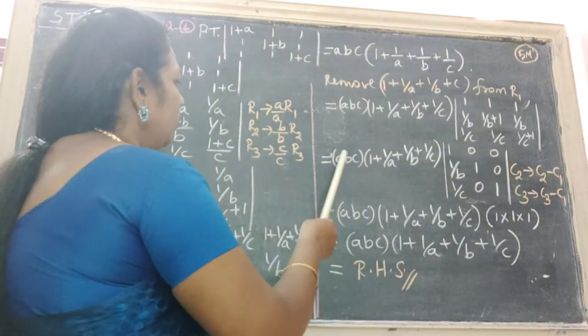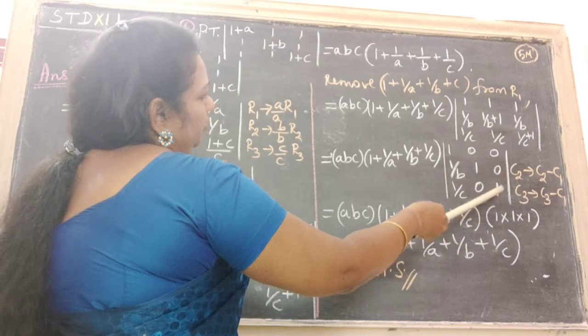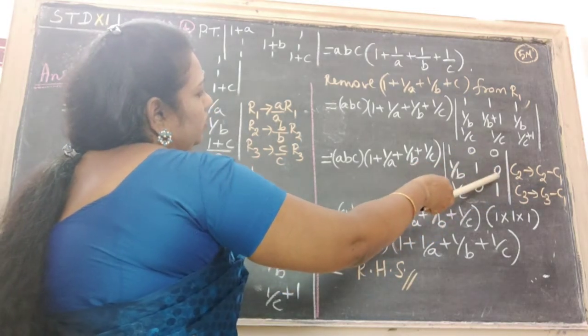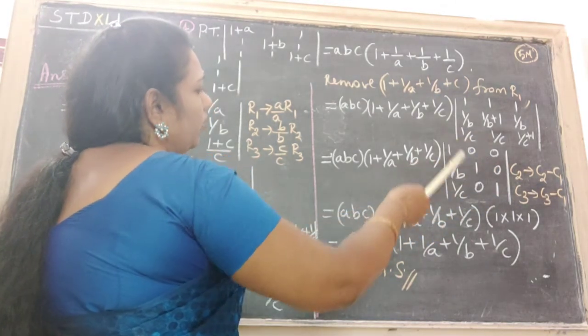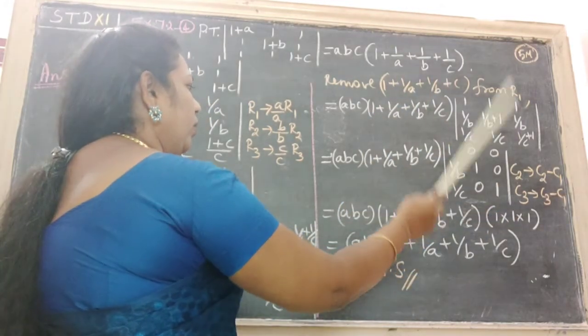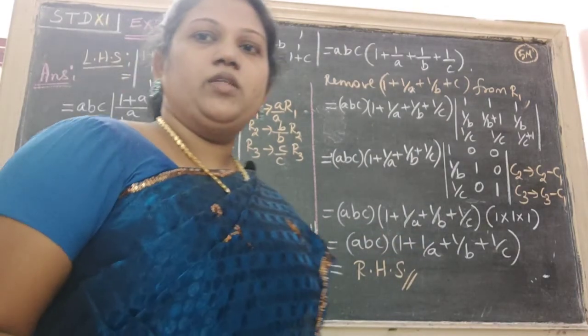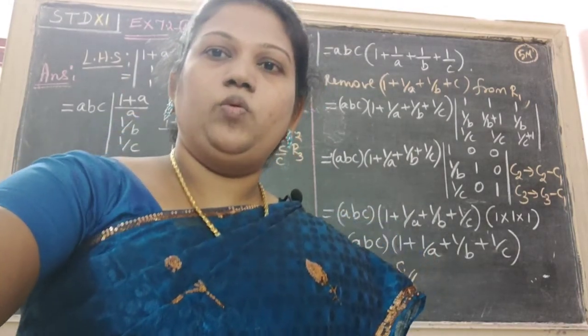Now write down these two brackets, multiplying the diagonal. The diagonal elements give us 1 times 1 times 1. Therefore we get the right-hand side. Hence, left-hand side equals right-hand side. Hence proved.